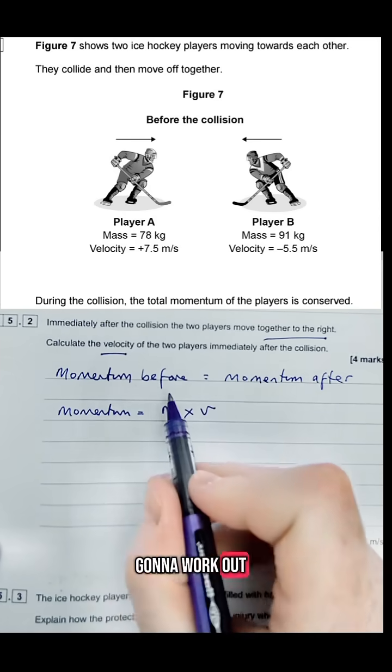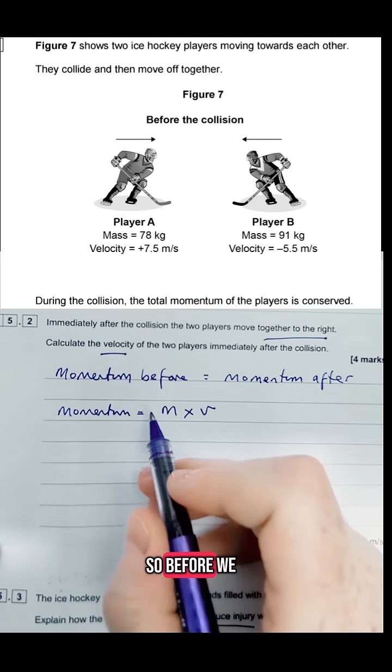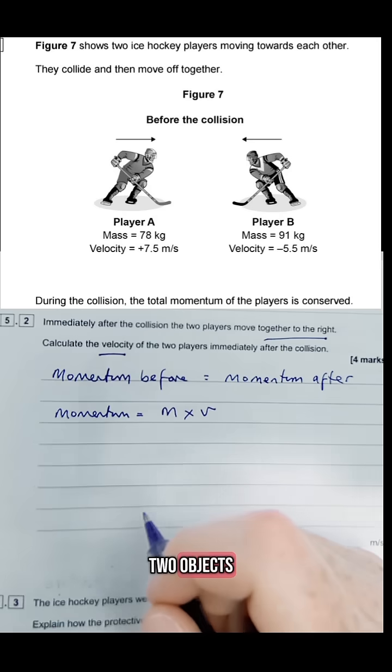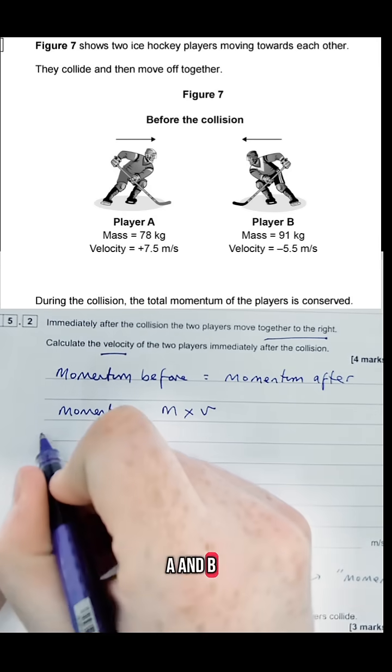So first of all we're going to work out the momentum before the collision and then we're going to use that to work out the velocity after. Before, we can use these two objects or two hockey players to work out their total momentum. So we've got A and B. Let's work on it separately.